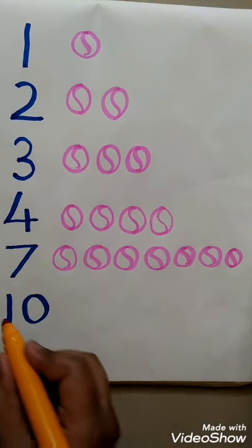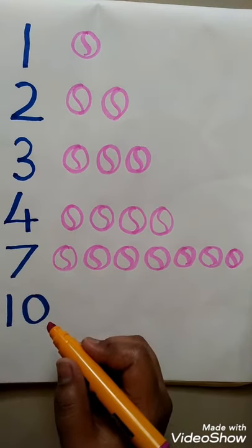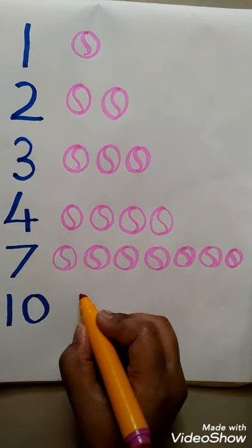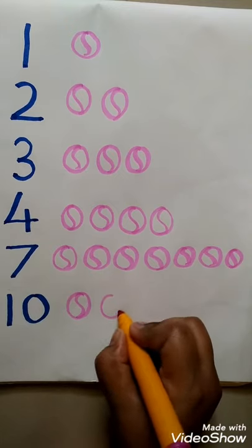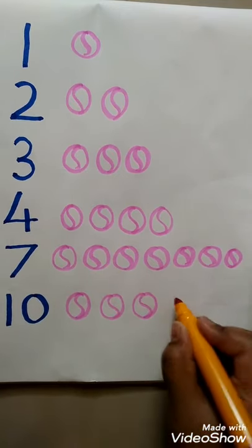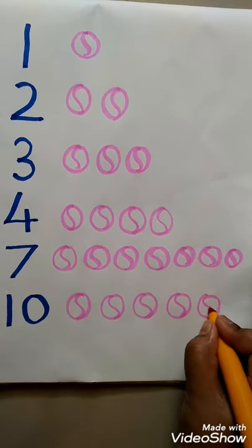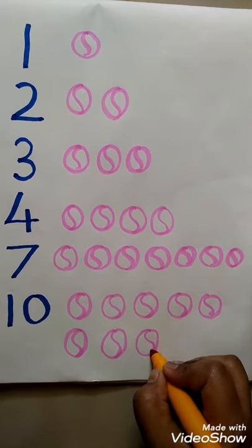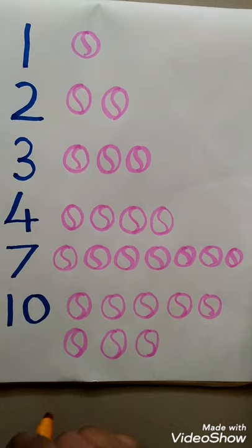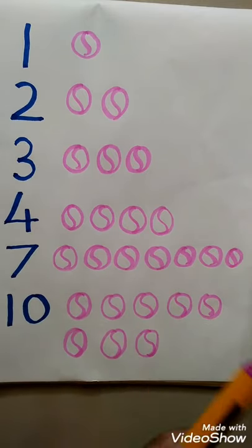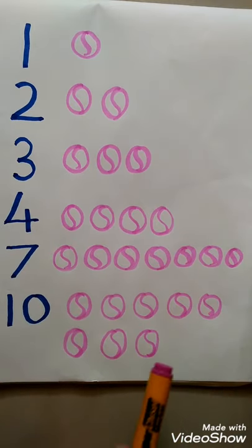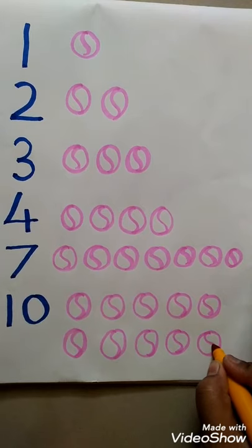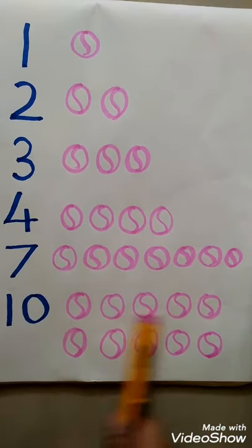Then after that number 10. So number 10 — how many balls am I supposed to draw? 10 balls. So count: 1, 2, 3, 4, 5, 6, 7, 8. Should I stop here? No. Number 10, 8 balls — wrong. Number 10, 10 balls. So continue counting: 8, 9, 10. Now stop. So number 10, 10 balls.